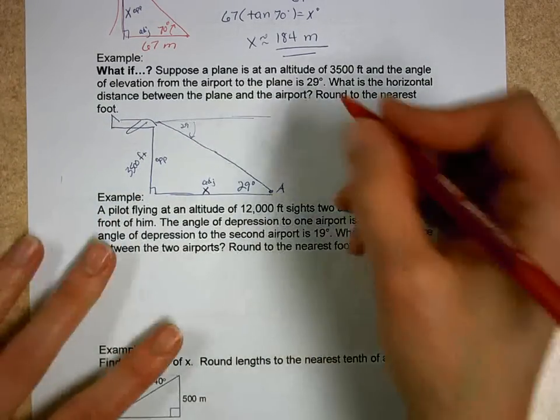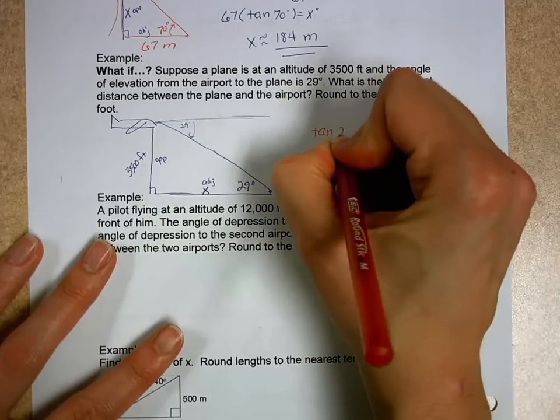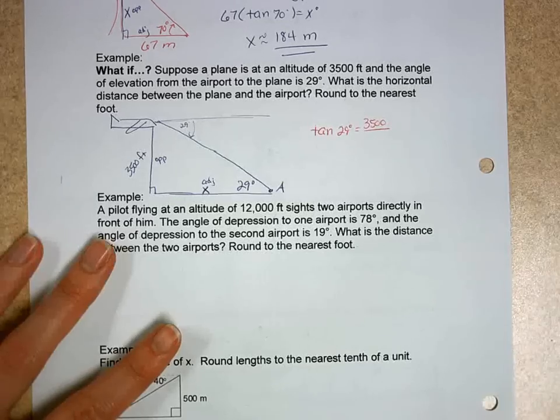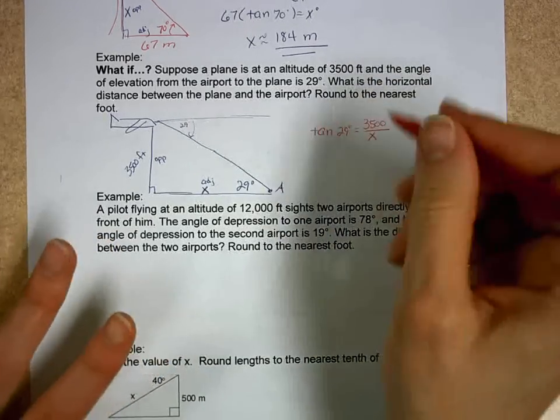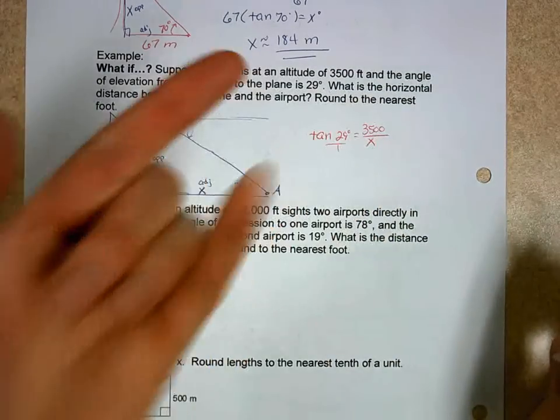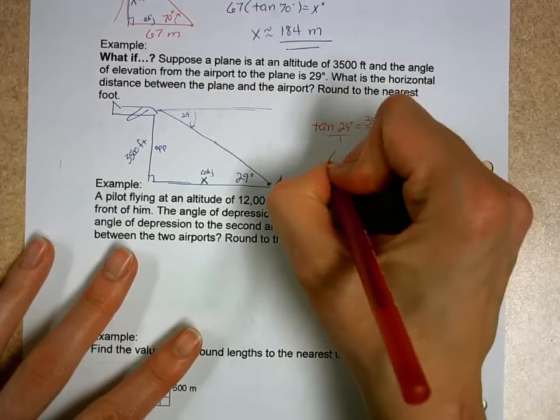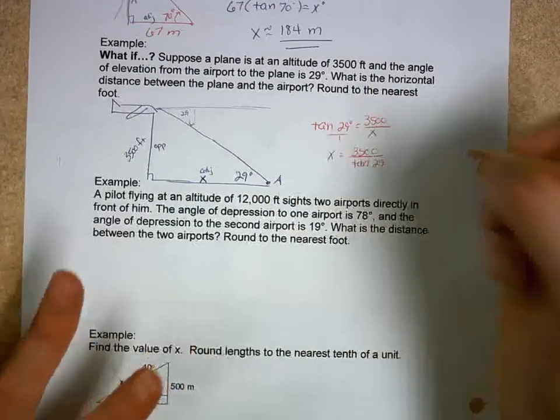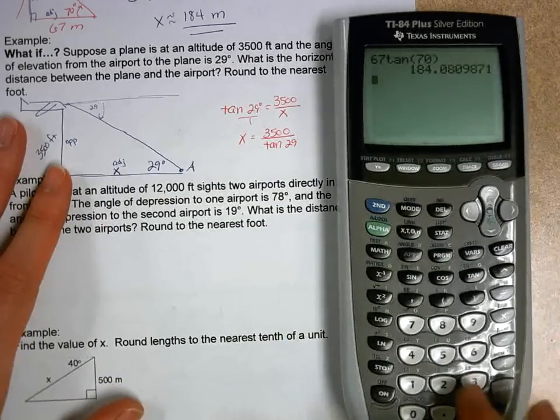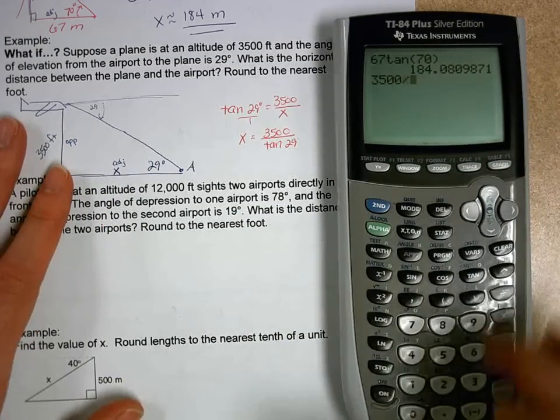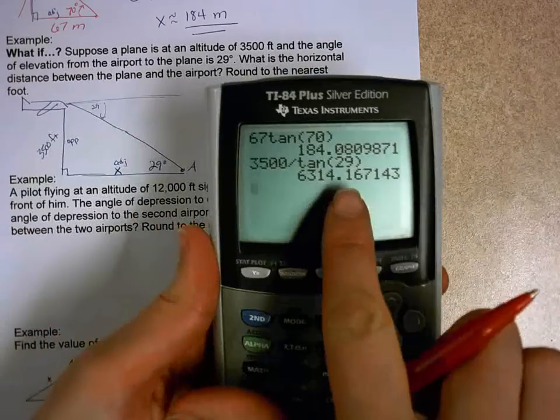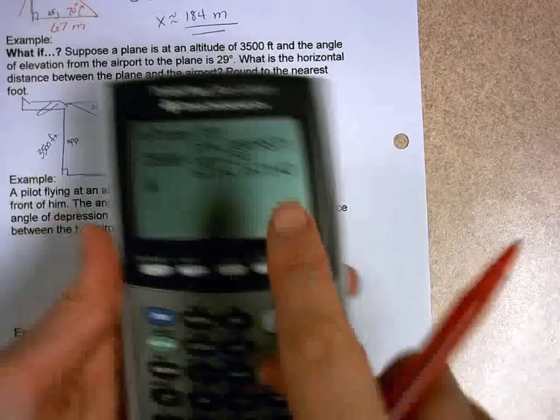I'm going to use tangent once again. The tangent of 29 degrees is opposite, which is 3,500 feet, over adjacent, which is x. If you solve for this, you can just switch the extremes because of proportions. So x equals 3,500 divided by the tangent of 29 degrees. I just go 3,500 divided by the tangent of 29 degrees. They say to the nearest foot, so that's approximately 6,314 feet.